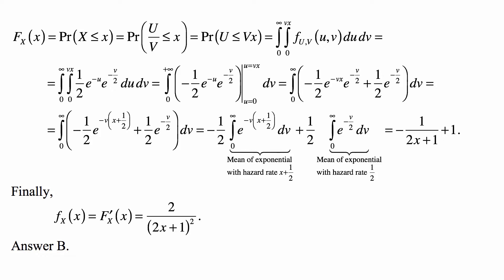First, we take the integral from 0 to vx of the expression as a function of u. We have (1/2)e^{-u}e^{-v/2}, so e^{-v/2} is a constant with respect to u. We integrate e^{-u}; the integral of e^{-u} is -e^{-u}, and we evaluate that from u = 0 to u = vx.